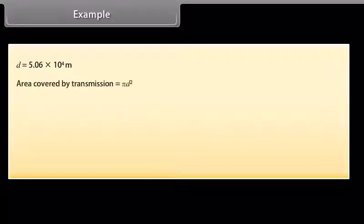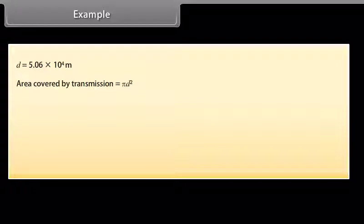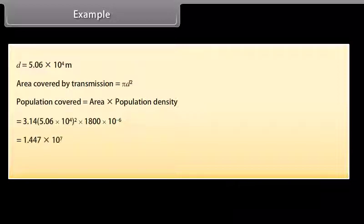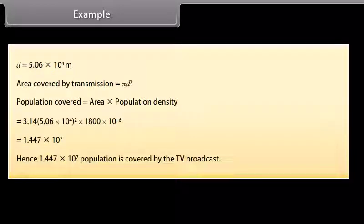Area covered by transmission = πD². Population covered = area × population density. Substituting the values, the population covered = 1.447 × 10⁷. Hence, 1.447 × 10⁷ people are covered by the TV broadcast.